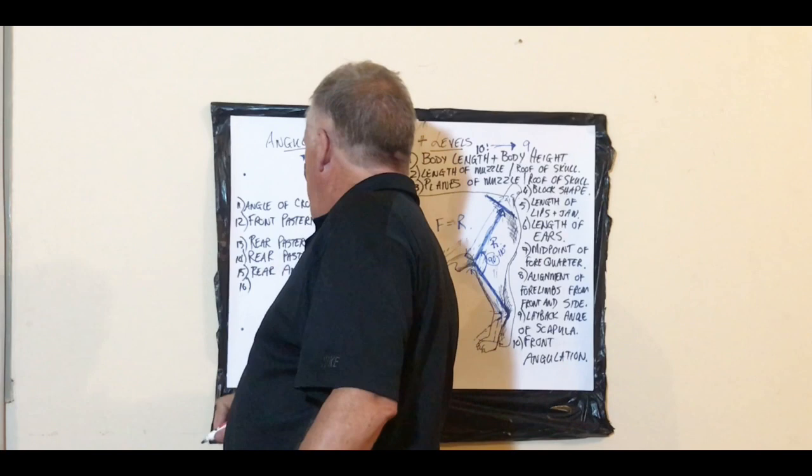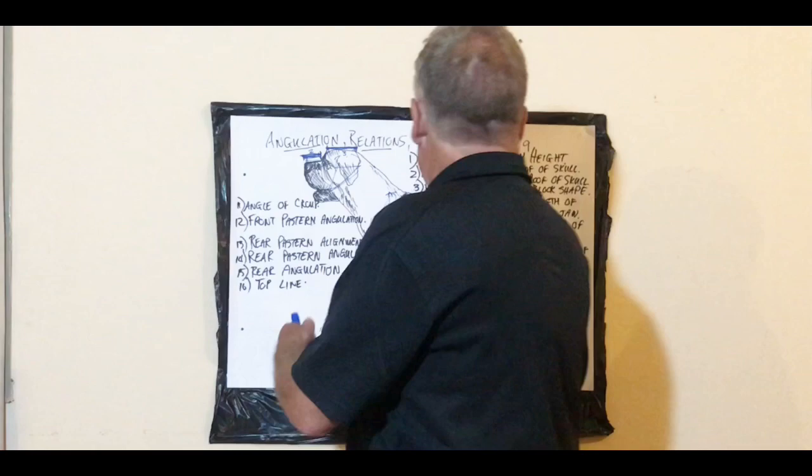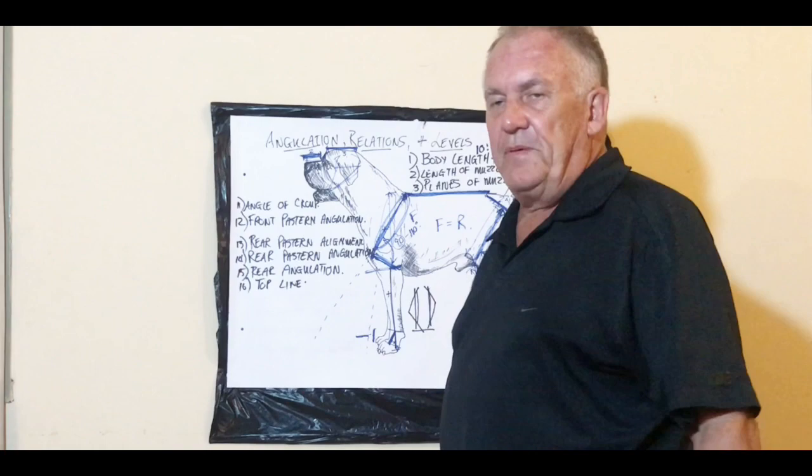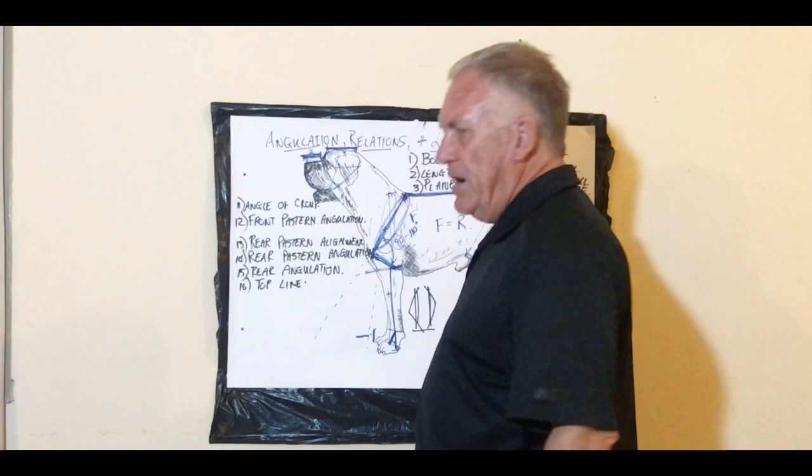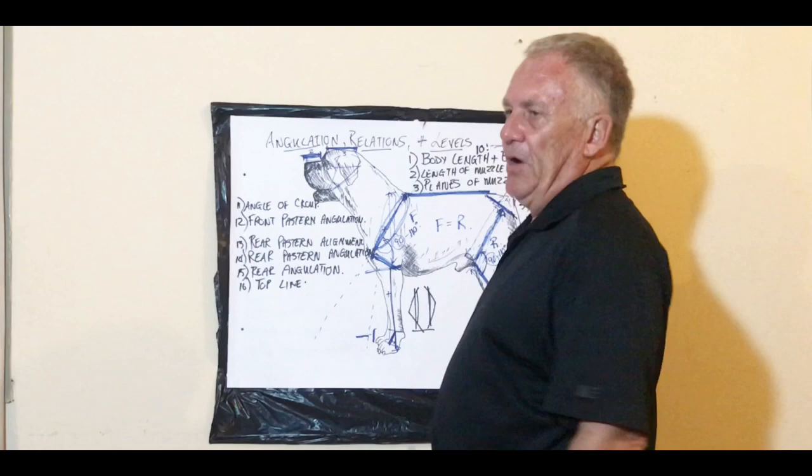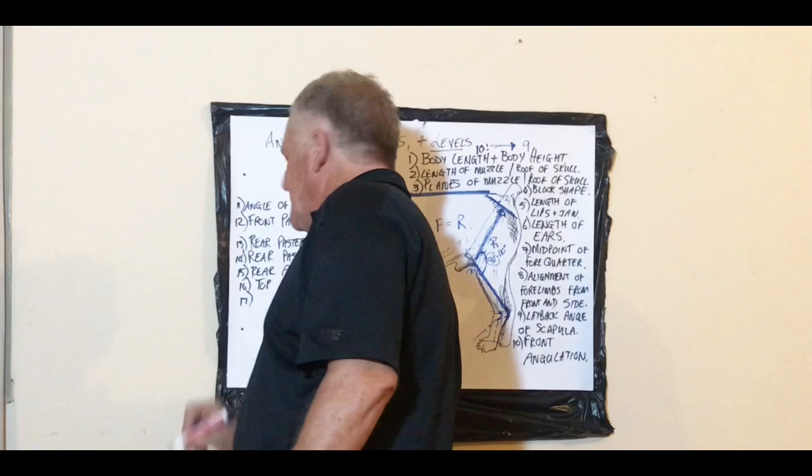Item 16 is the topline — simply the line at the top of the dog. According to the breed standard, it should be level. It must not run downhill, it must not sag like a big dipper, and it must not go in a bulge. A level topline is what the breed standard requires.